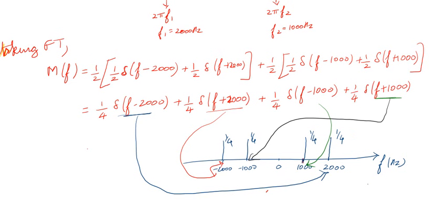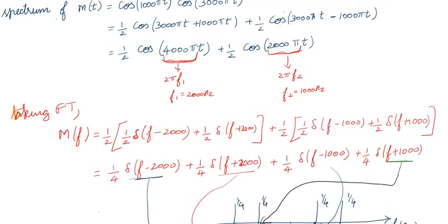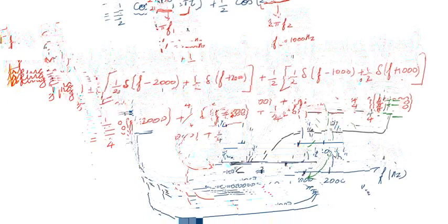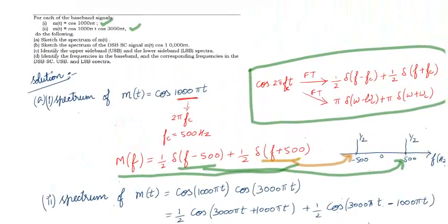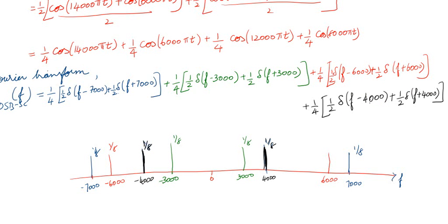Now, regarding the upper sideband and lower sideband — we have only sketched the spectrum of the message signal so far. In part (b) of the question, we modulate by multiplying the message with the carrier cos(10000πt) to form the DSB-SC signal.